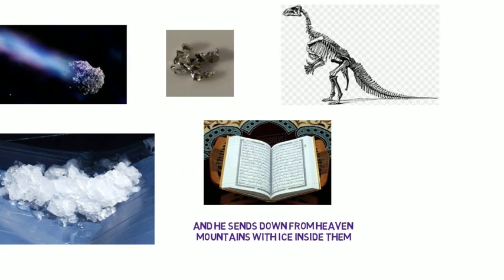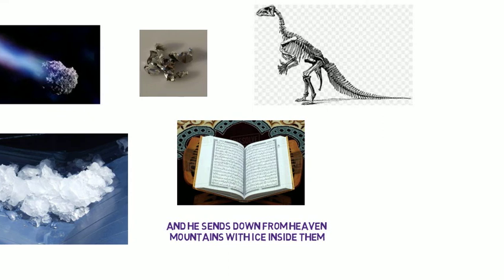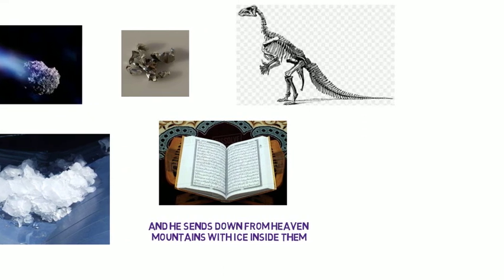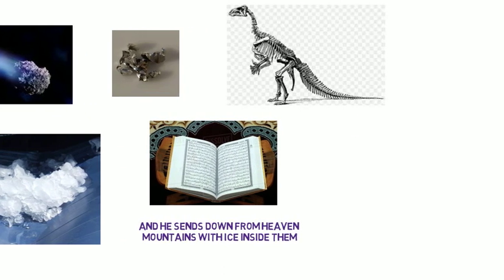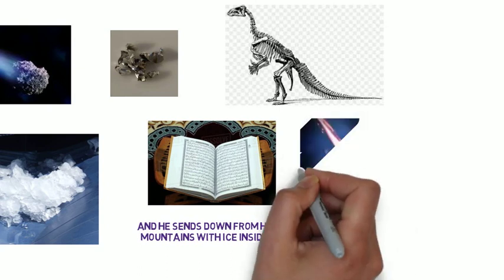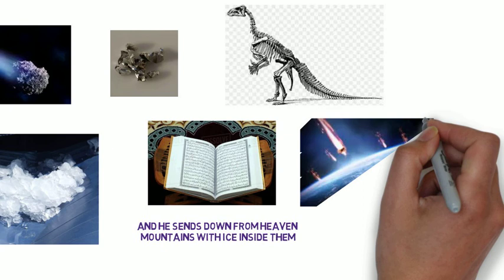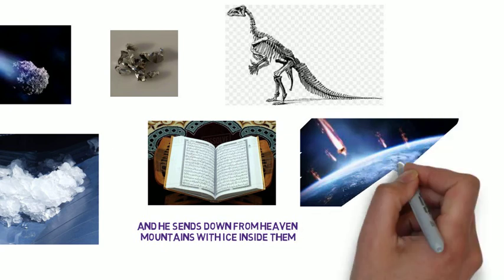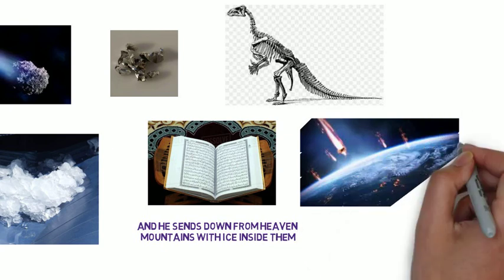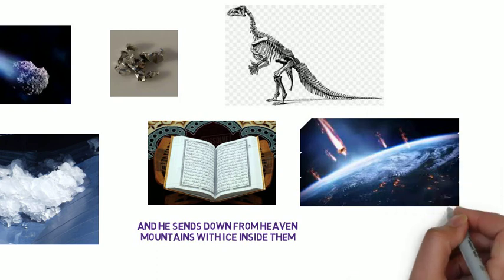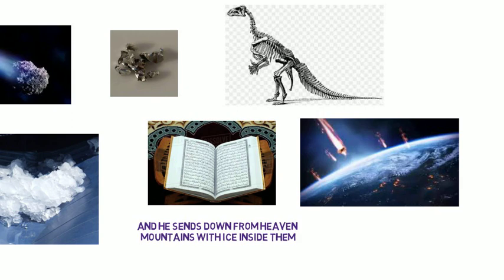In this verse, Allah Almighty distinguishes between rain coming from the clouds and mountains of ice coming from heaven, making a very bright flash. The description of these mountains agrees with that of meteoroids when they hit the Earth's atmosphere and make a very bright flash. Furthermore, Allah Almighty mentions that these mountains strike whoever He wishes, indicating that they will hit the Earth and some creatures on it.